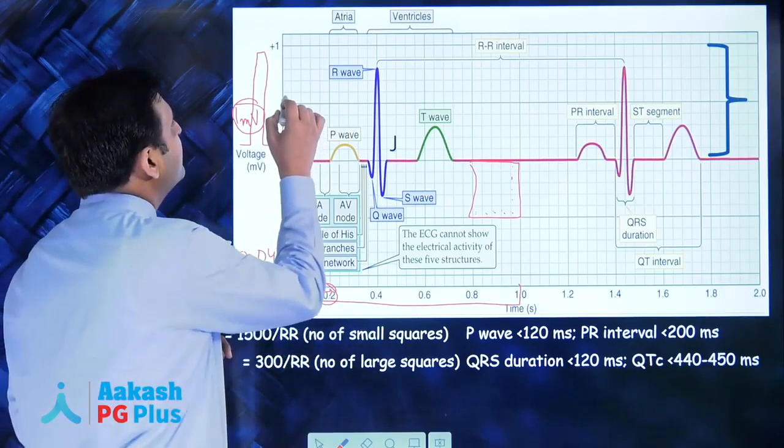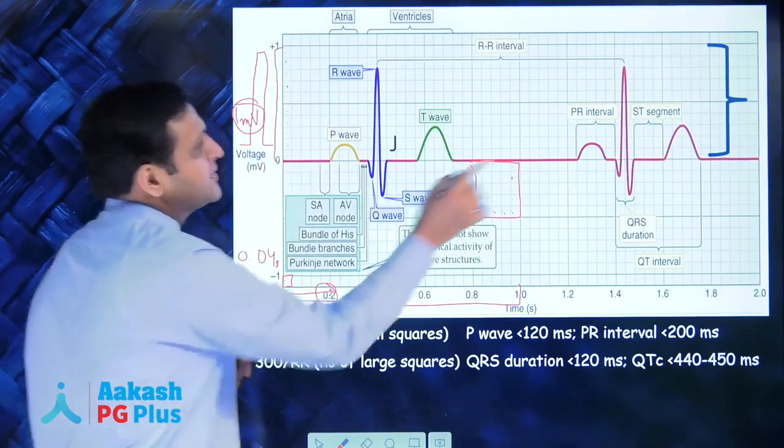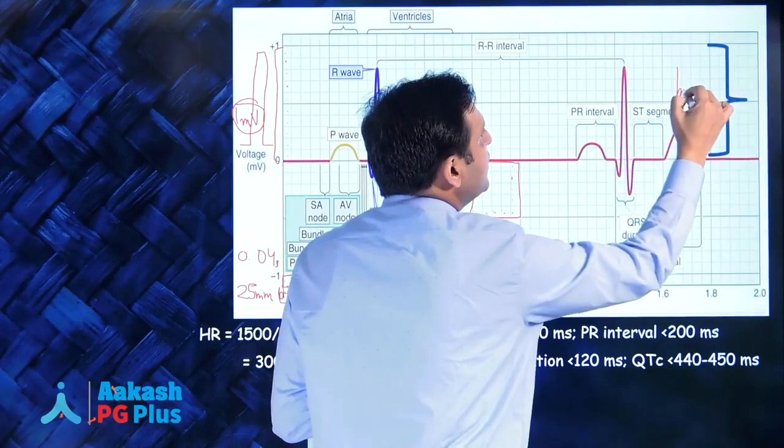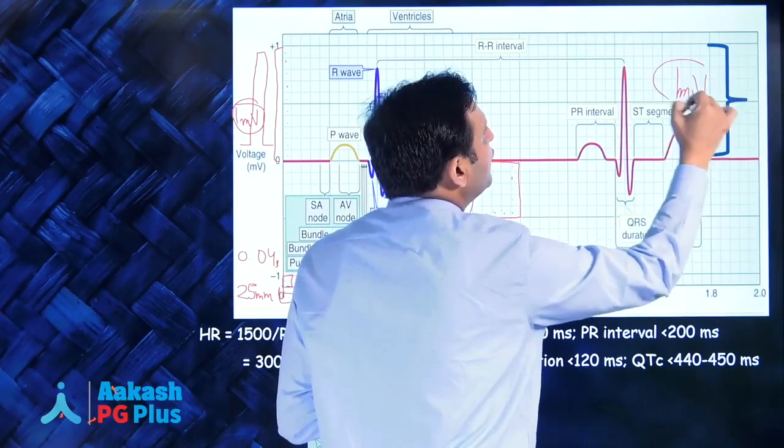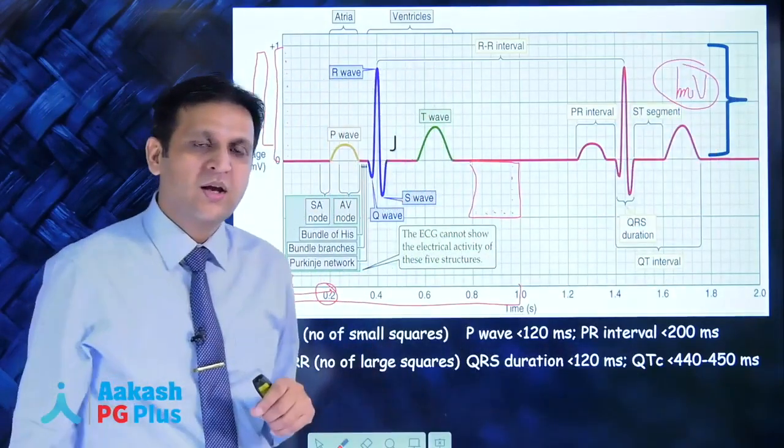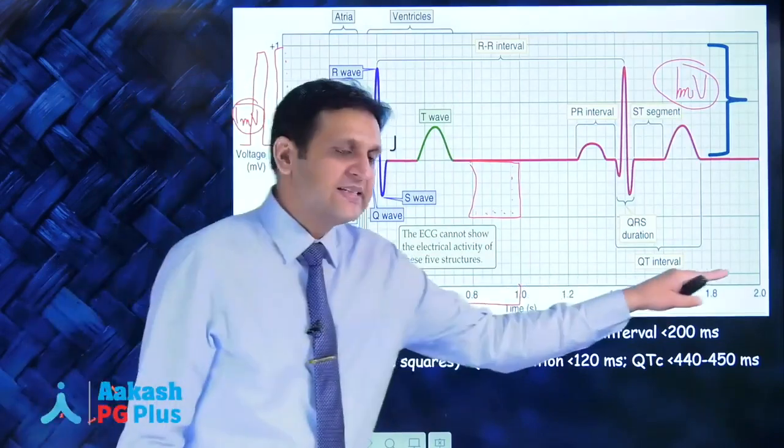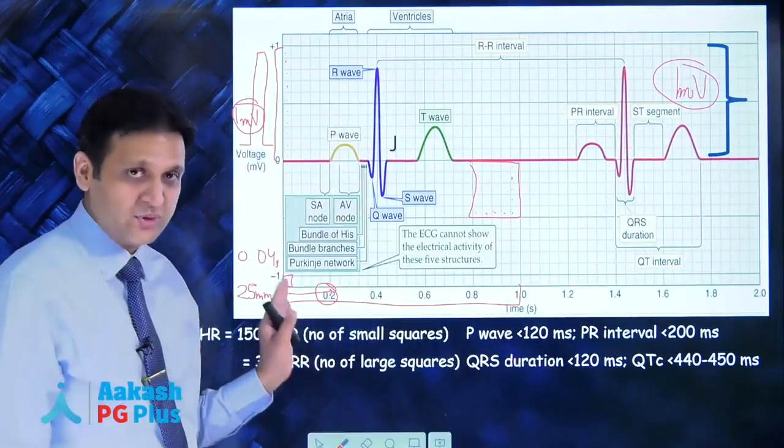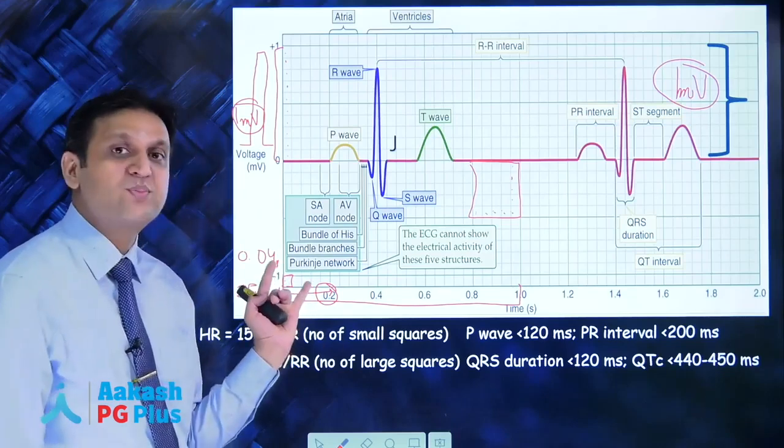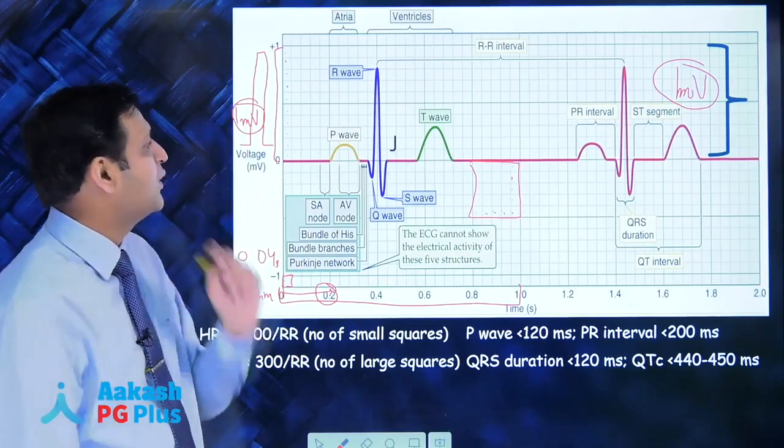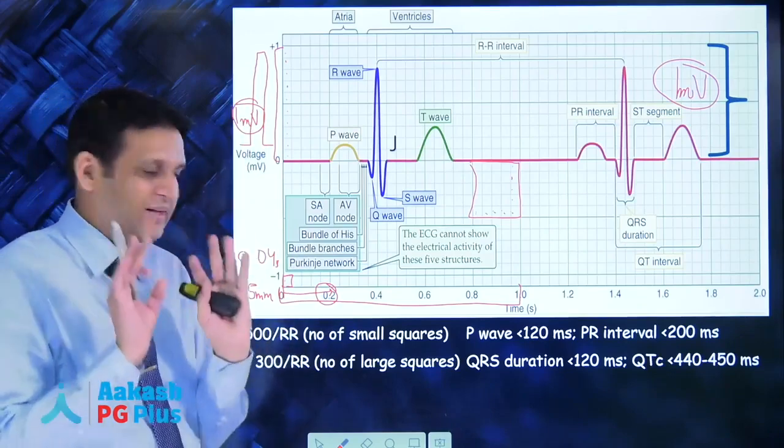So 1, 2, 3, 4, 5, 1, 2, 3, 4, 5 - this is 10 squares. 10 squares equals 1 millivolt of voltage. These two concepts are clear: on the horizontal side, each small square is 40 milliseconds, large square is 200 milliseconds. On the vertical side, 10 small squares equal 1 millivolt. That's the basic concept.